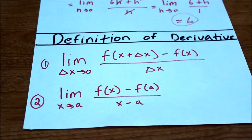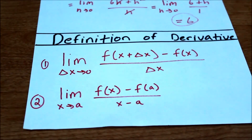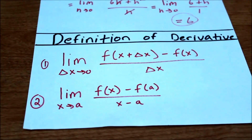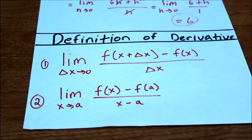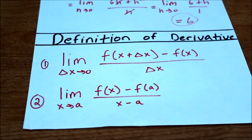The first definition states that the limit as delta x — the change in x — approaches 0, of f of x plus delta x minus f of x, all over delta x. Our second definition is the limit as x approaches a of f of x minus f of a, over x minus a.